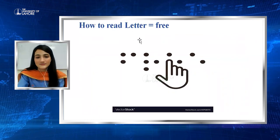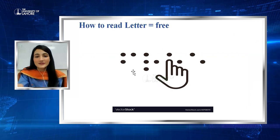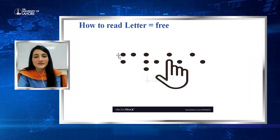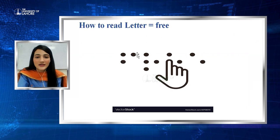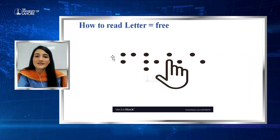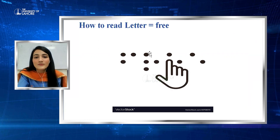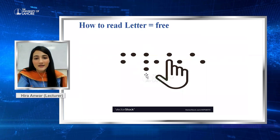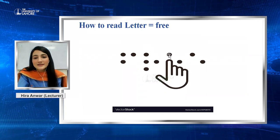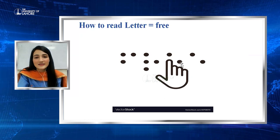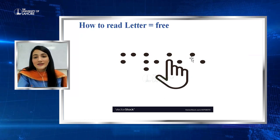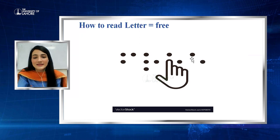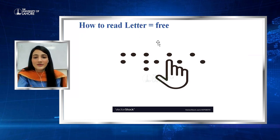How to read a letter — here is an activity you can solve now. If dots 1, 2, and 4 are raised, this is F. If dots 1, 2, 3, and 5 are raised, this is R. If dots 1 and 5 are raised, this is E (empty). And again dots 1 and 5 make E. So this spells the word FREE.